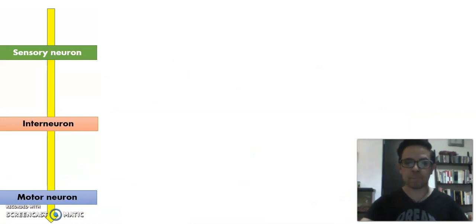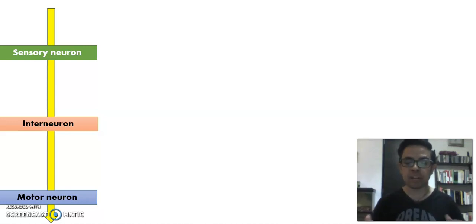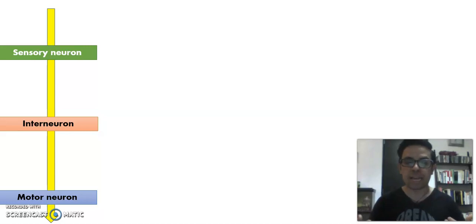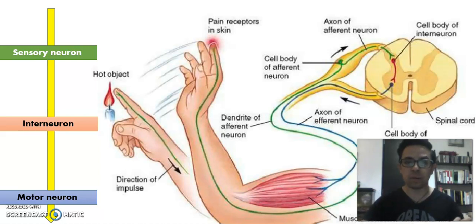The next part we are going to see is how does the reflex work. Why do we call it a reflex? A reflex is a very short and quick response of our body, generally involving pain or some involuntary movements that we naturally perform, like when the doctor checks your knee reflex. The reflex is made by three special types of neurons. The sensory neuron, which is like the green cable in this diagram, is in charge of receiving the stimuli or the information from the environment.